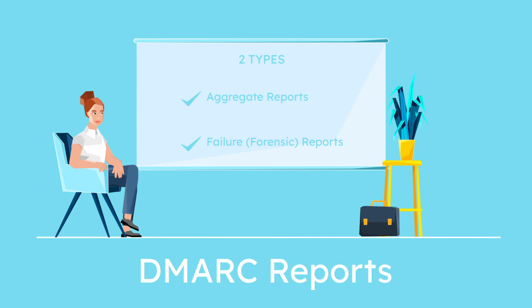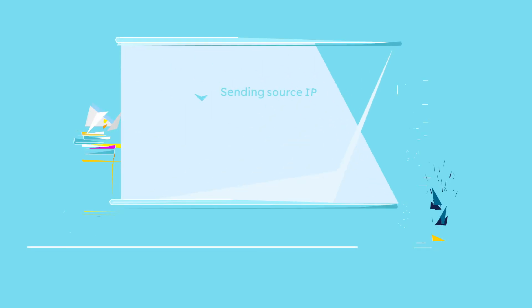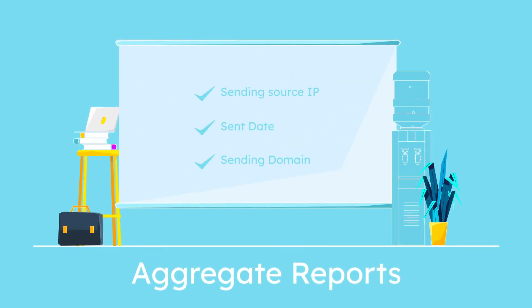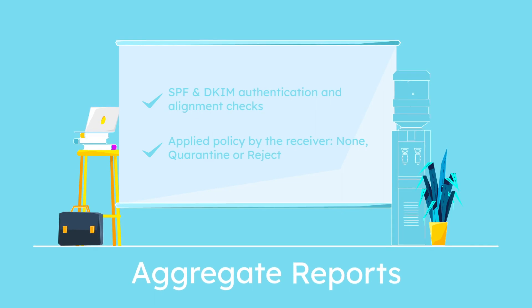These two reports serve different purposes. Aggregate reports contain information about groups of email messages, including sending source IP, send date, sending domain, SPF and DKIM authentication and alignment checks, as well as the applied policy by the receiver, which can be none, quarantine, or reject.